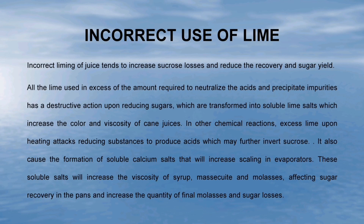In this slide you will learn how much quantity of lime should be used and what are the effects of incorrect use of lime. Incorrect liming of juice tends to increase sucrose losses and reduce the recovery and sugar yield. All the lime used in excess of the amount required to neutralize the acids and precipitate impurities has a destructive action upon reducing sugars, which are transformed into soluble lime salts that increase the color and viscosity of cane juices. Excess lime upon heating also attacks reducing substances to produce acids which may further invert sucrose, and causes the formation of soluble calcium salts that increase scaling in evaporators. These soluble salts will increase the viscosity of syrup, massecuite and molasses, affecting sugar recovery in the pans and increasing the quantity of final molasses and sugar losses. Lime is generally used at about 0.6 to 0.7% on sugarcane crushed.